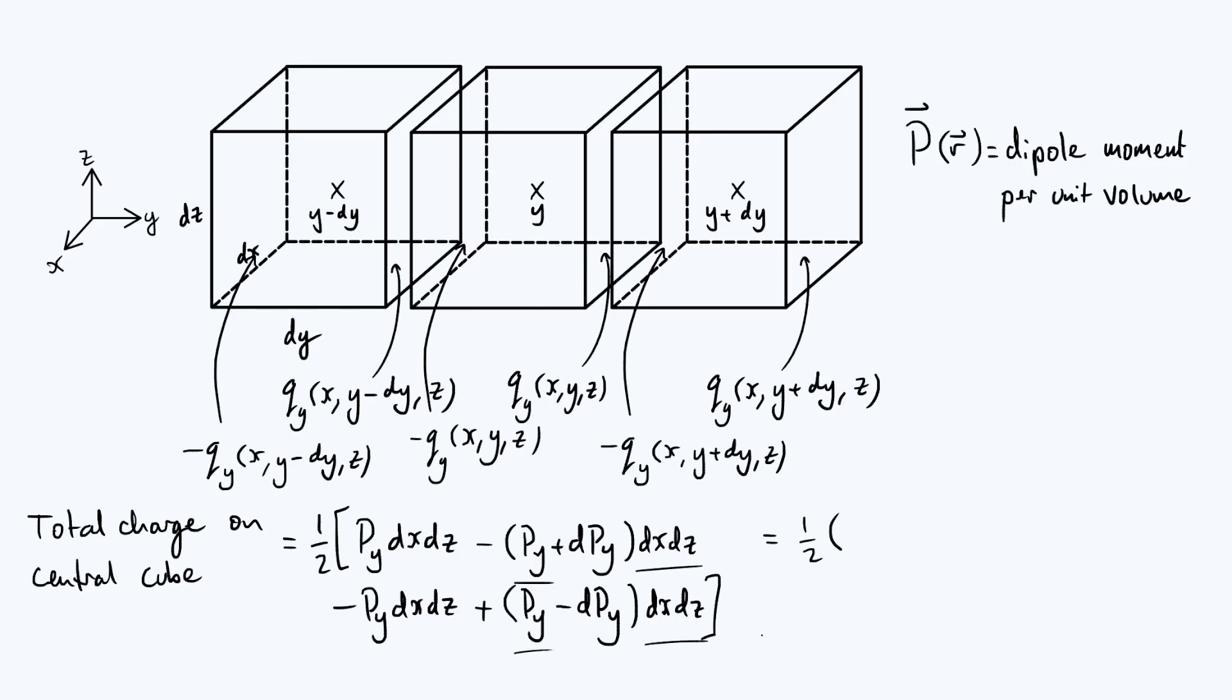You're just left with minus two dP_y, small increment in P_y, times dx dz. Then the half cancels with the two and simplifies nicely to minus dP_y dx dz.